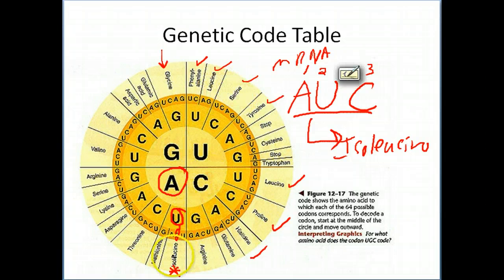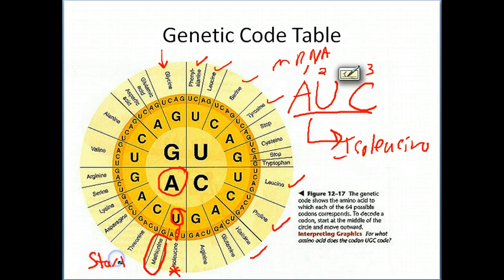I should also mention that there are special codons called start and stop codons. I'm going to go ahead and circle methionine and tell you that this is the start codon. And there's only one sequence for that. So AUG equals methionine, and that's the start codon. So you always see methionine at the beginning of a protein sequence.